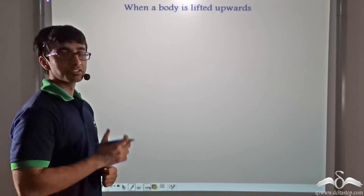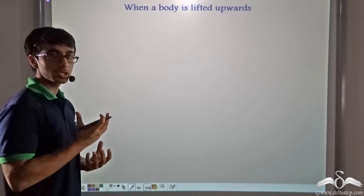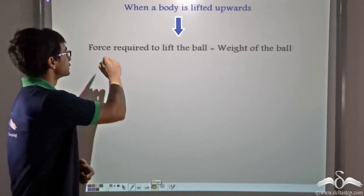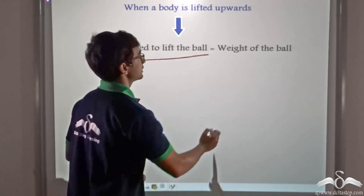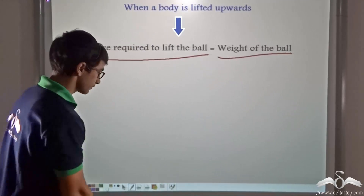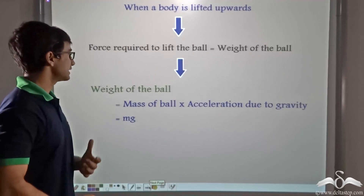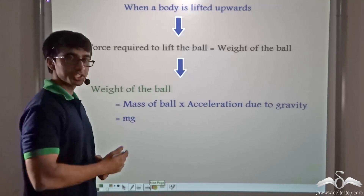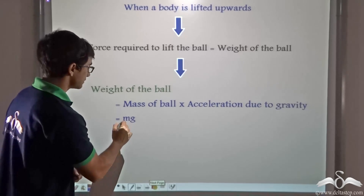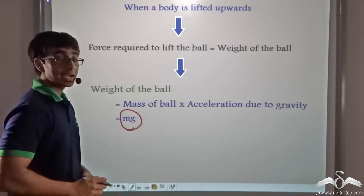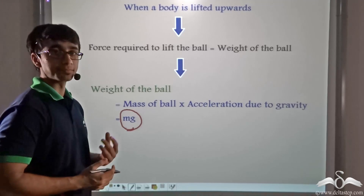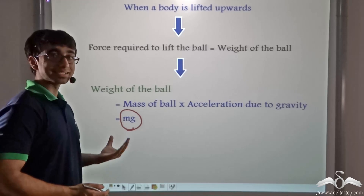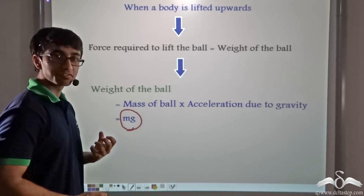The force that has to be applied on the ball will have to be equal to its weight. Thus the force required to lift the ball is equal to the weight of the ball. The weight of the ball equals mass times acceleration due to gravity — if mass is m and acceleration due to gravity is g, then weight is mg, and this is the exact force the man requires to lift the ball.